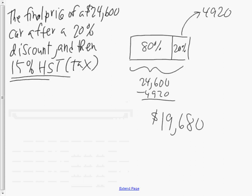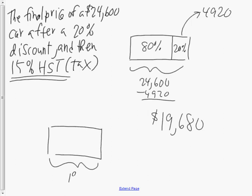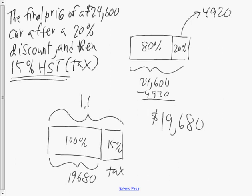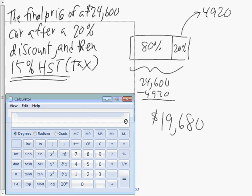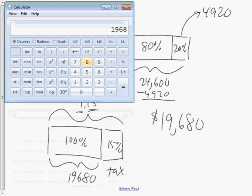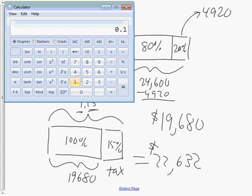Then it says we have to find 15% HST. If this rectangle represents $19,680, when you add the tax — 100% of the cost plus 15% — that's 1.15 as one number. So 100% is 1, and 15% is 0.15. Taking $19,680 and multiplying by 1.15 gives the final price: $22,632. Alternatively, find 15% of $19,680 and add it — you get the same answer, $22,632.